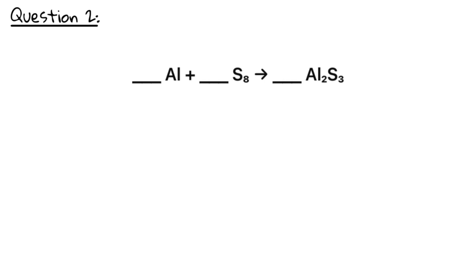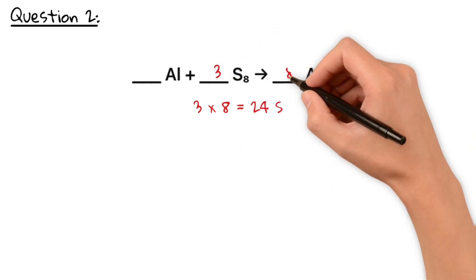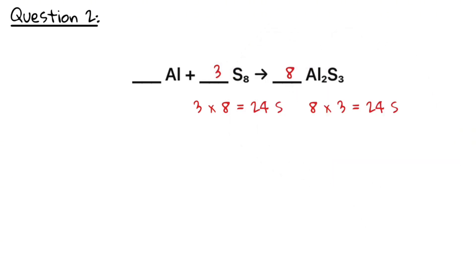Starting with the aluminium here will lead us in circles, so we better start with sulfur. The lowest common multiple of 8 and 3 is 24, so we need 3S8 and 8Al2S3. Now we have 16 aluminium on the right-hand side, so we also need 16 aluminium on the left-hand side. So the final balanced equation is 16 aluminium plus 3S8 reacts to 8Al2S3.